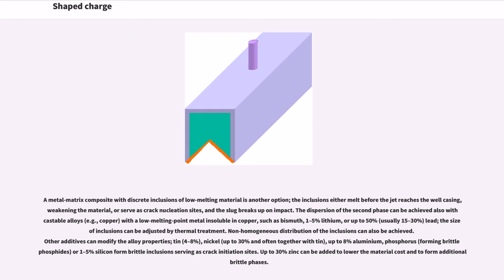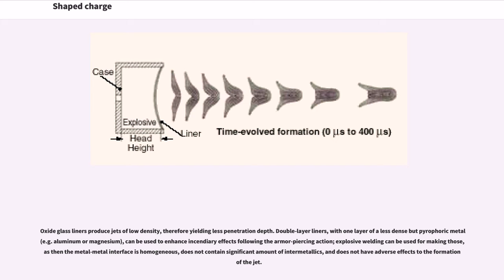Other additives can modify the alloy properties: tin, 4-8%, nickel up to 30% and often together with tin, up to 8% aluminum, phosphorus forming brittle phosphides, or 1-5% silicon form brittle inclusions serving as crack initiation sites. Up to 30% zinc can be added to lower the material cost and to form additional brittle phases. Oxide glass liners produce jets of low density, therefore yielding less penetration depth. Double-layer liners with one layer of a less dense pyrophoric metal, for example aluminum or magnesium, can be used to enhance incendiary effects following the armor-piercing action. Explosive welding can be used for making those, as then the metal-metal interface is homogeneous, does not contain significant amount of intermetallics, and does not have adverse effects to the formation of the jet.